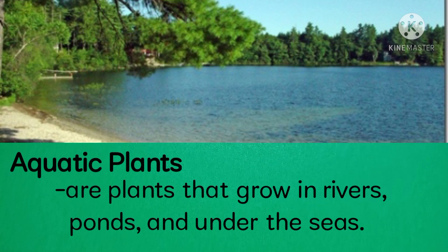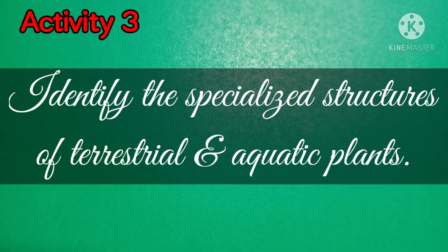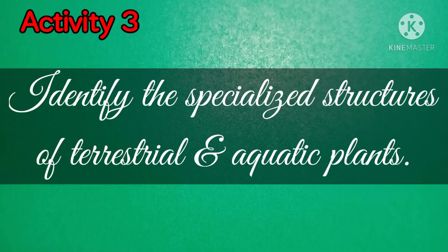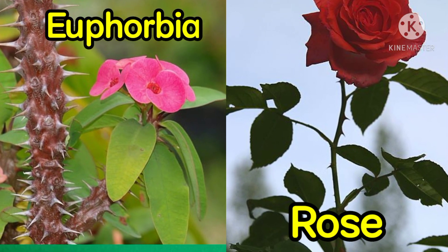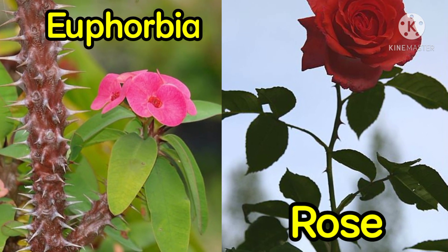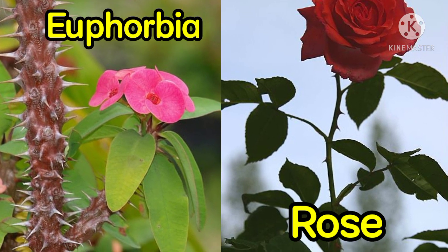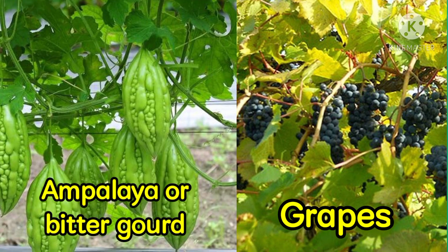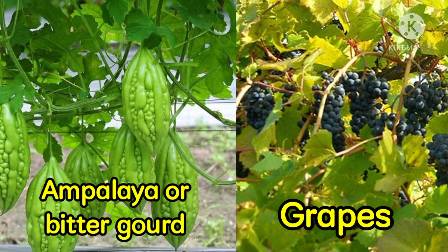Some have wide, smooth, and shiny leaves that let them float in water. Activity 3: Identify the specialized structures of terrestrial and aquatic plants. Observe carefully the pictures of euphorbia and rose — both have thorns to protect them from animals. Ampalaya and grapes are both vines; they grow long stems and climb on a trellis to protect their fruits.